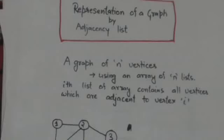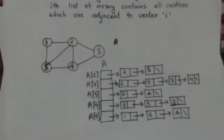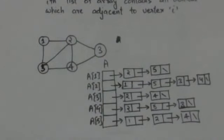Welcome back. In this tutorial we will learn how we can represent a graph by adjacency list. In adjacency list representation of a graph, a graph with n vertices is represented using an array of n lists. The ith list of this array contains all vertices which are adjacent to vertex i.